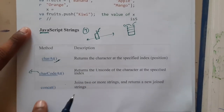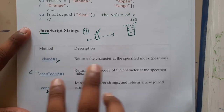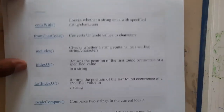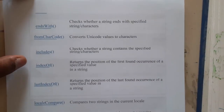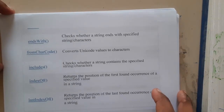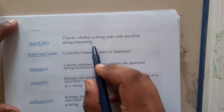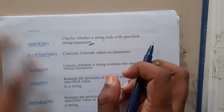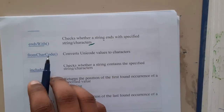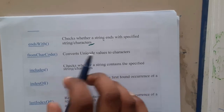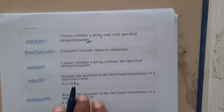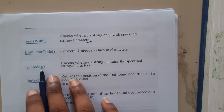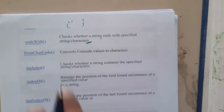`concat` is nothing but concatenation — used to join two strings. `endsWith` checks whether the string ends with a specific string or character. `fromCharCode` converts Unicode values to characters. `includes` checks whether a string contains the specified substring or not — for example, you write 'hello' inside the brackets and it will check whether that string is present.